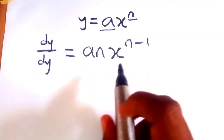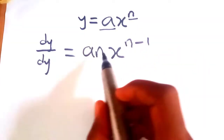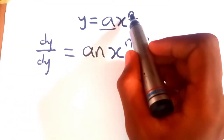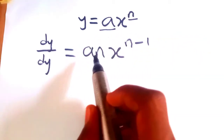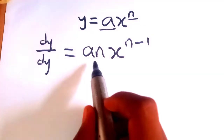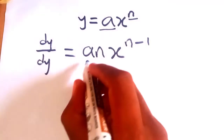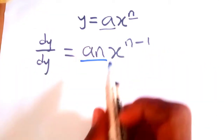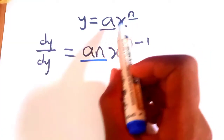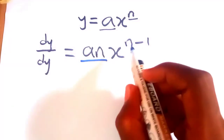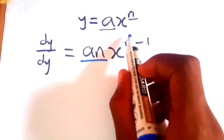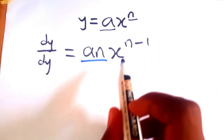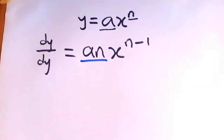So how do we come about this formula? What happened is that the coefficient of our derivative is just the product of the power of x and the coefficient of x. So when we have a function and we're asked to find the derivative, the coefficient of our derivative will be the product of the power of the function and the coefficient of the function. And the new power of x in the derivative will be the power of our function minus one.